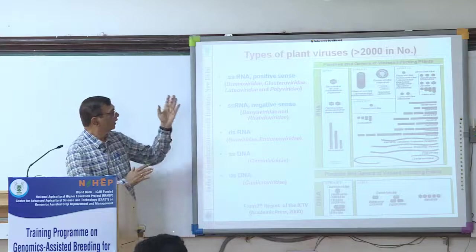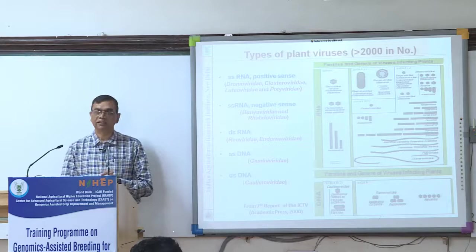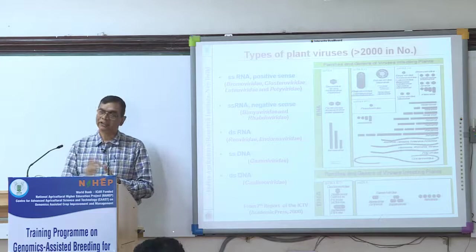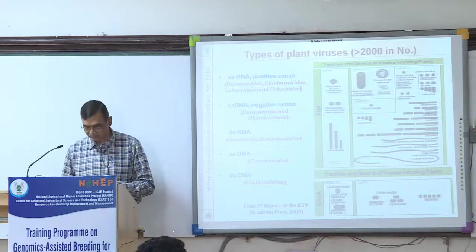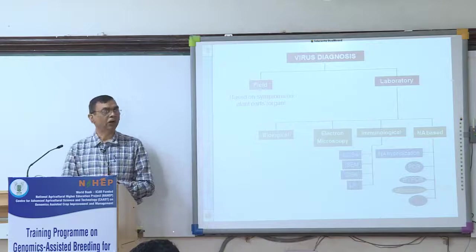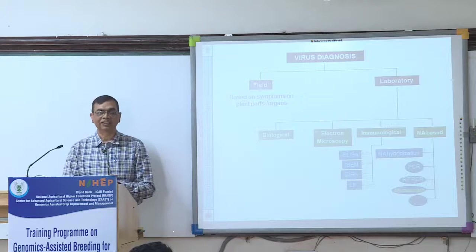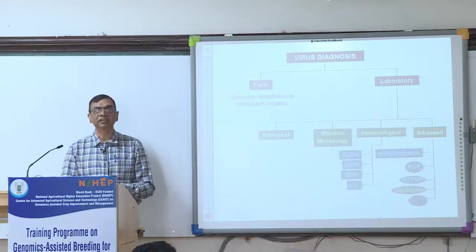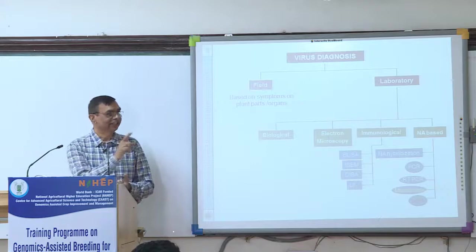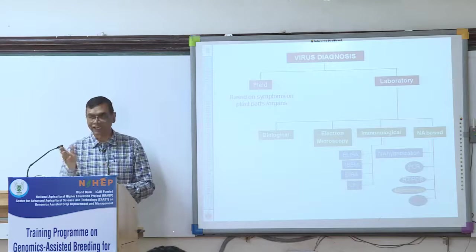There are more than 1,500 viruses and many crops grown in the field may be infected by one or more than one virus. How to diagnose them? By seeing symptoms alone, we can only say it is Bhindi yellow vein mosaic disease — we cannot say it is being caused by Bhindi yellow vein mosaic virus, and I will tell you why later.